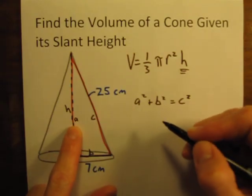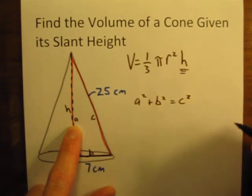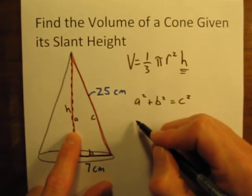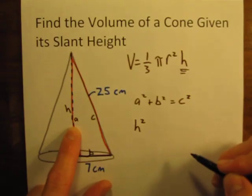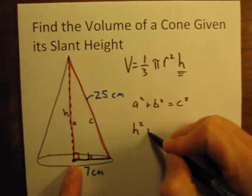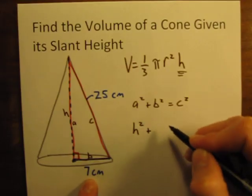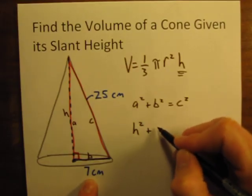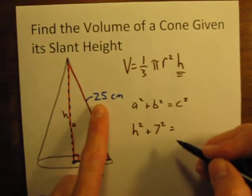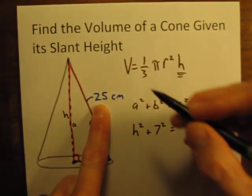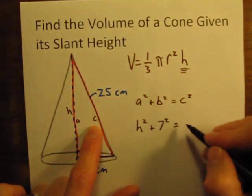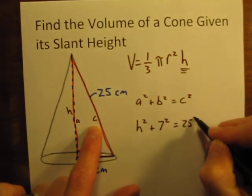A squared, we don't know what it is, but all we know is A squared has a length of h. So we'll just say h squared. The height of this cone squared plus B, the radius, is 7. 7 squared is equal to C squared. This is the slant height, the outside edge of this cone. The slant height is 25 squared.